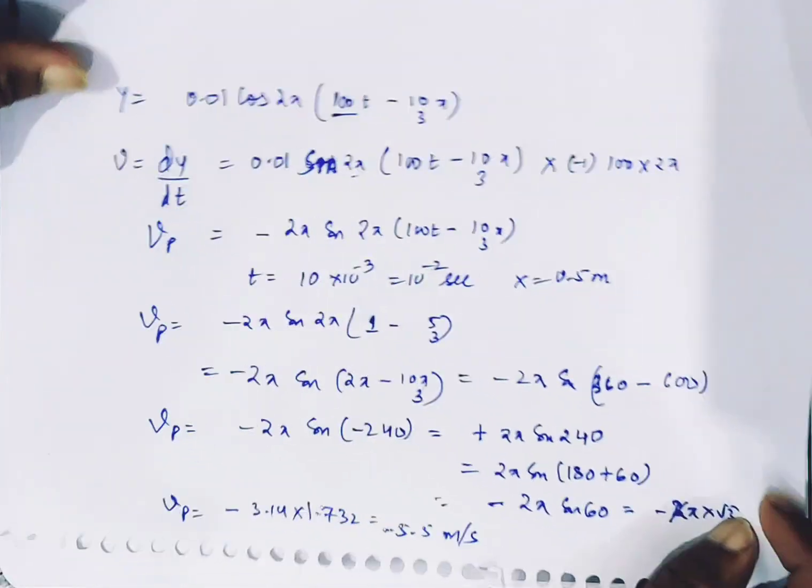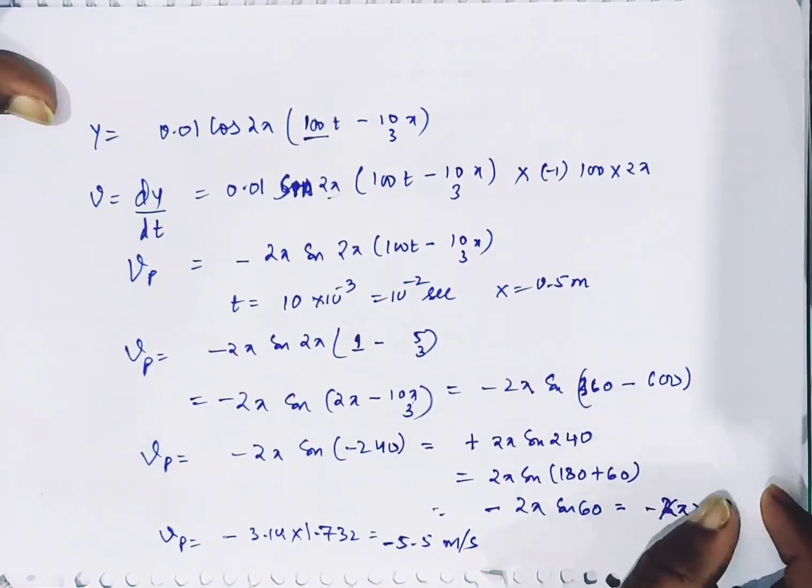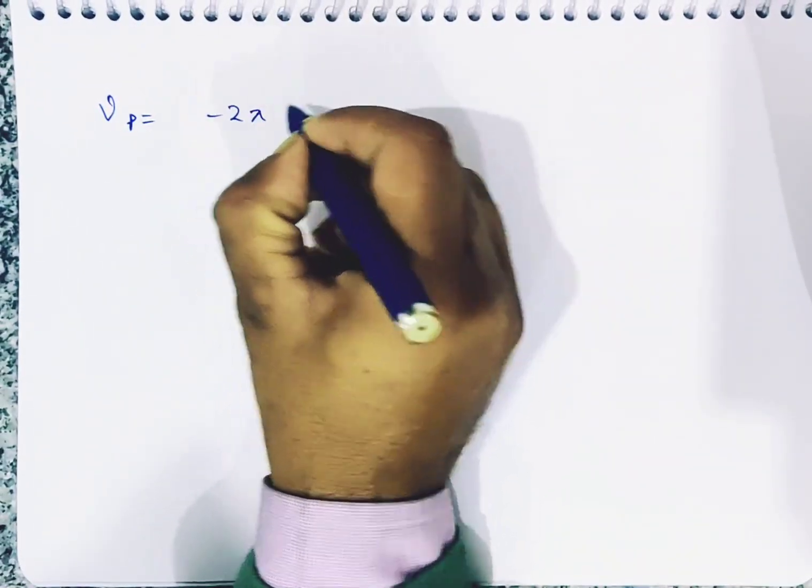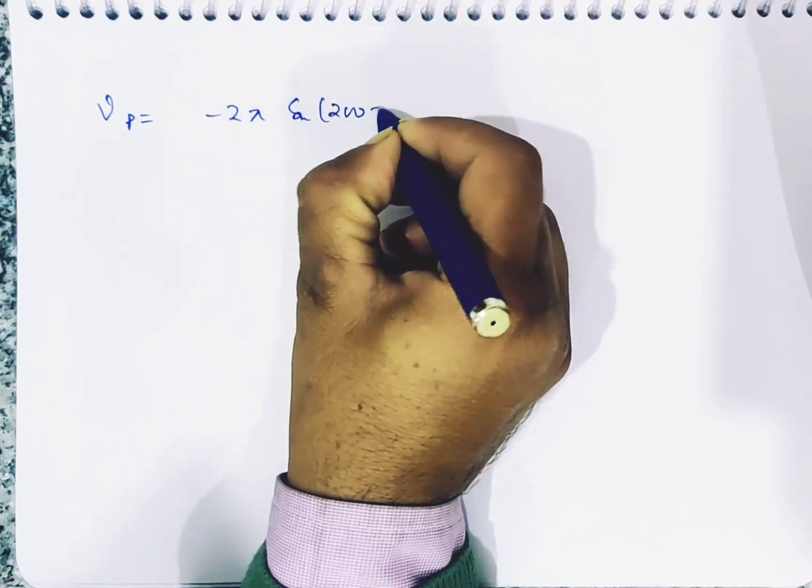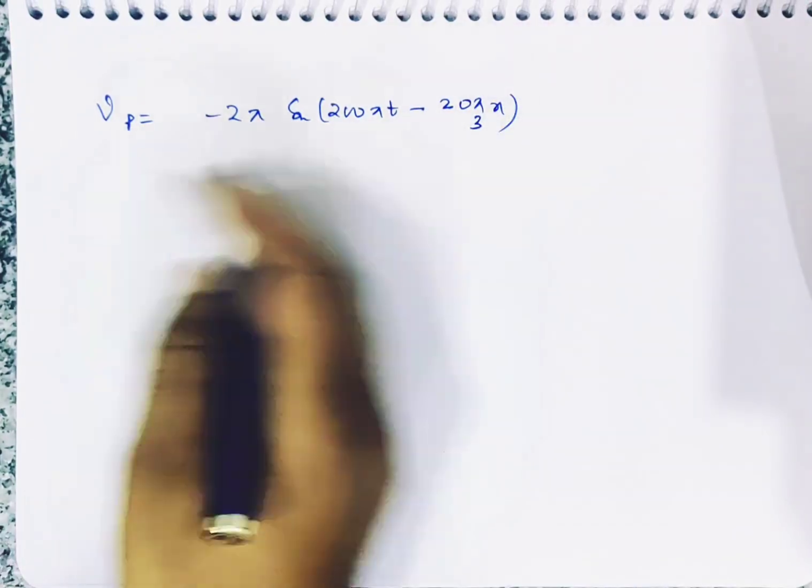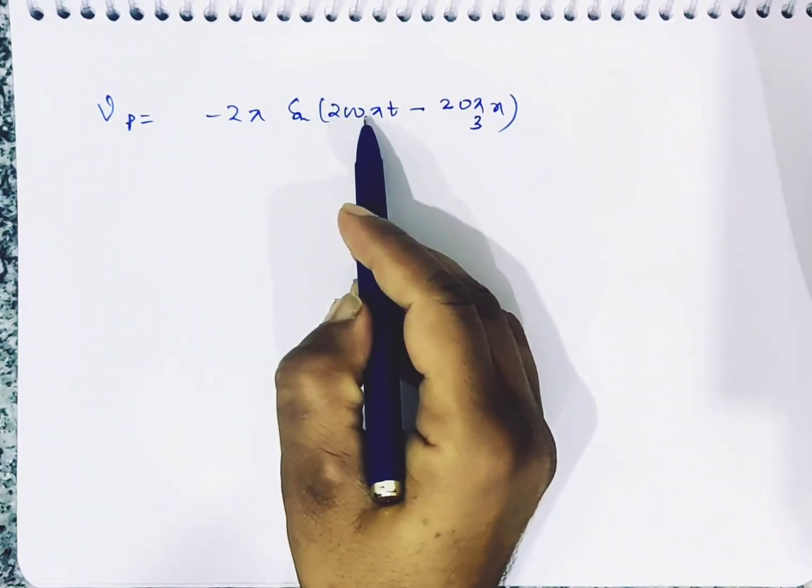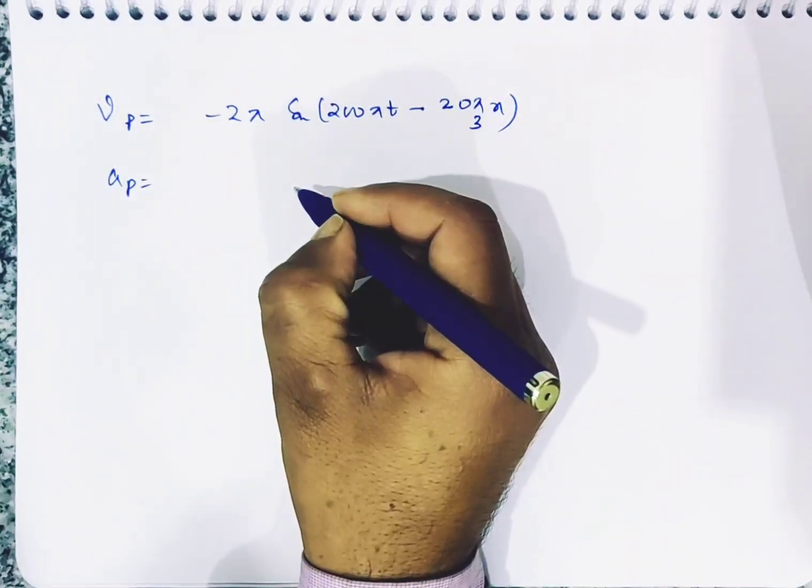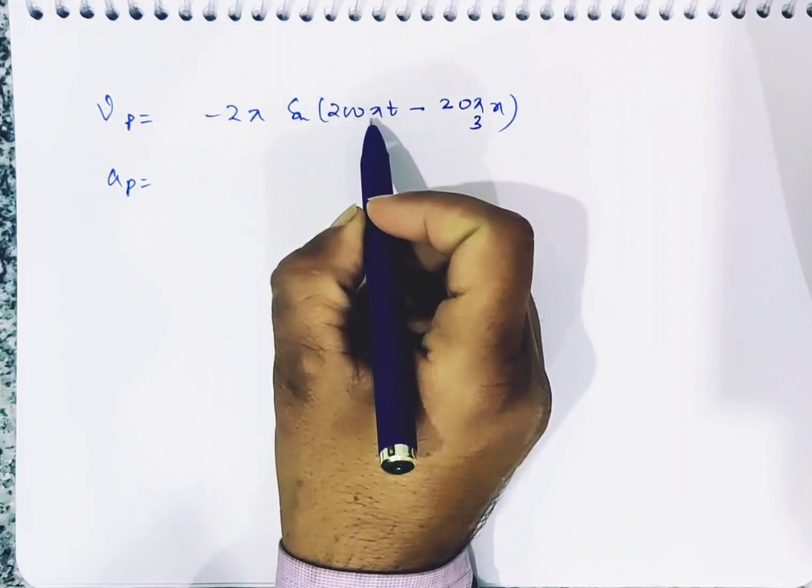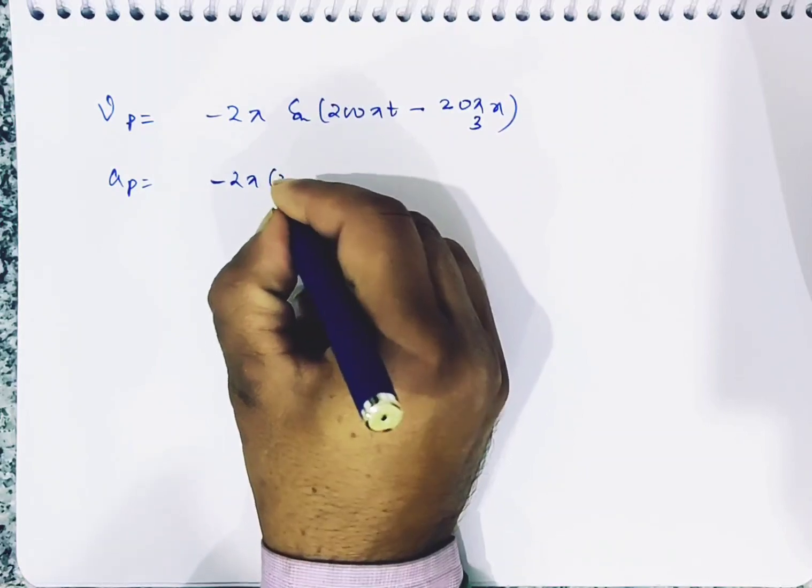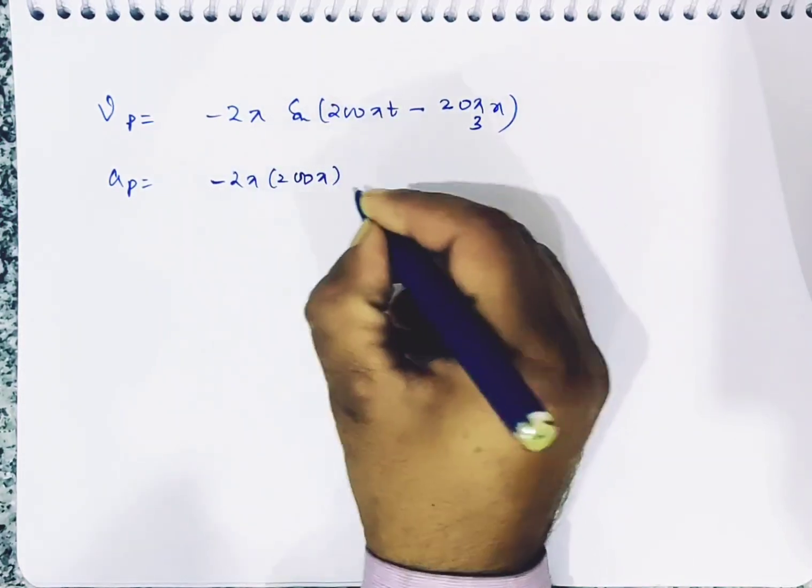Now the next part is to find acceleration. Acceleration requires differentiating velocity. We had velocity as minus 2 pi sin(200 pi t minus 20 pi by 3 x). Now we differentiate again for acceleration. 200 pi will be multiplied here, and sin becomes cos.